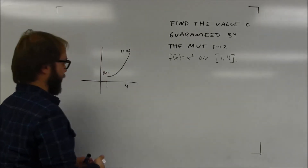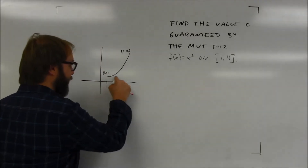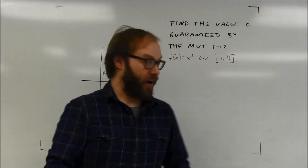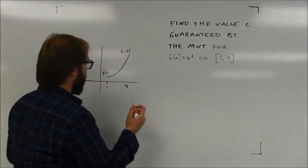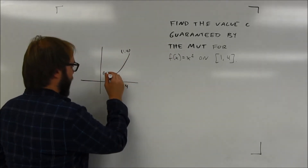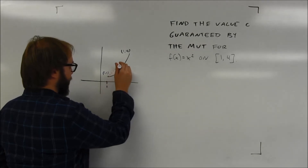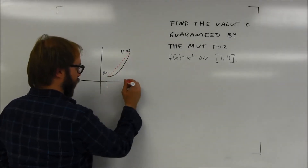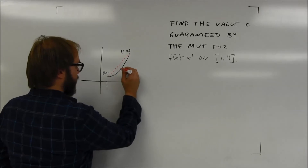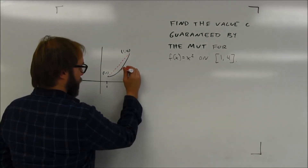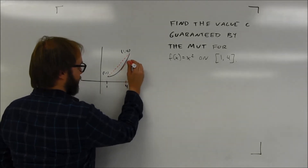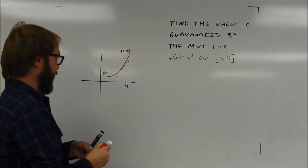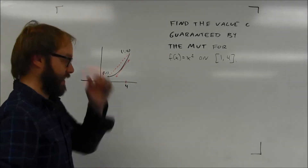Physically what we're saying here is that because the function is continuous and differentiable on this interval, if I find the average rate of change, there should be at least one point somewhere between 1 and 4 where the derivative equals the average rate of change — in other words, the slope of the tangent line equals the slope of the secant line.